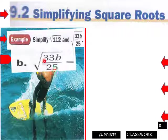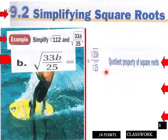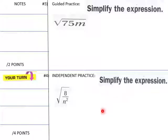Okay, so now the square root of 33b over 25. How would we do that? So we're going to use the quotient property of square roots. We'll make this the square root of 33b over the square root of 25. So with that, the square root of 25 is 5. Square root of 33b is pretty much just the way it is. So that would be that.